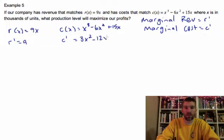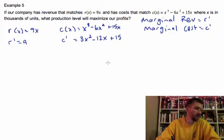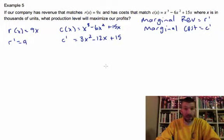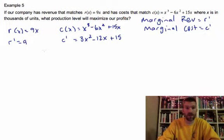And all we have to do is set these guys equal to each other and solve it out. So 9 equals 3x squared minus 12x plus 15.